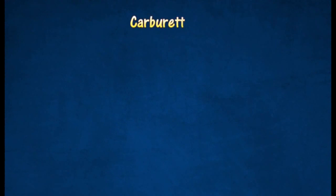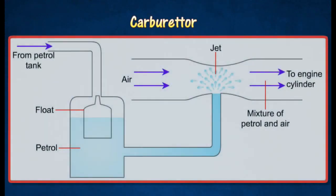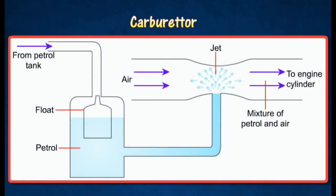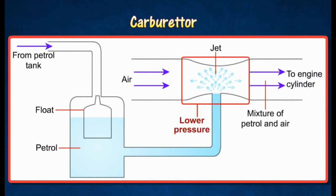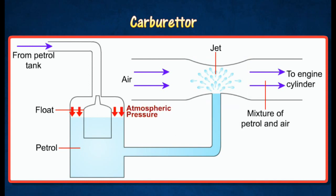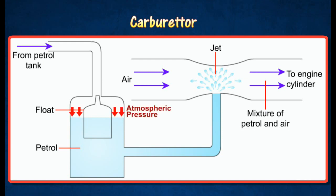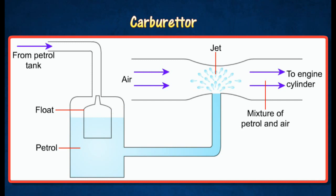A carburetor is used to produce a mixture of petrol and air, which can be burnt easily in the engine of a car. Air flowing at a higher speed through the narrow section causes the air pressure there to become lower. The atmospheric pressure pushes the petrol from the tank to flow out through the jet as a spray of petrol vapor after mixing with air.